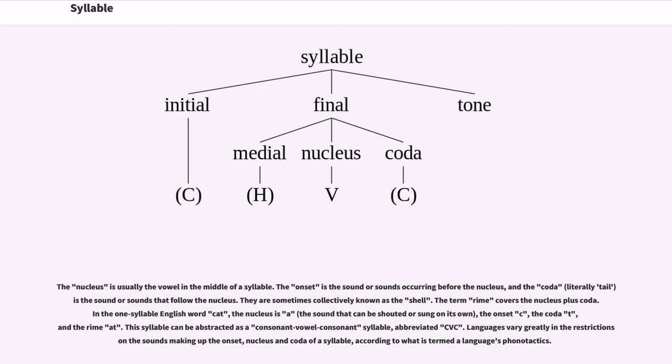The term rhyme covers the nucleus plus coda. In the one-syllable English word cat, the nucleus is a, the onset c, the coda t, and the rhyme at. This syllable can be abstracted as a consonant-vowel-consonant syllable, abbreviated CVC. Languages vary greatly in the restrictions in the sounds making up the onset, nucleus and coda of a syllable, according to what is termed a language's phonotactics.